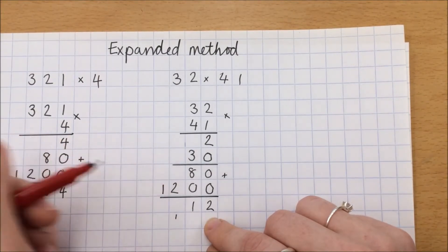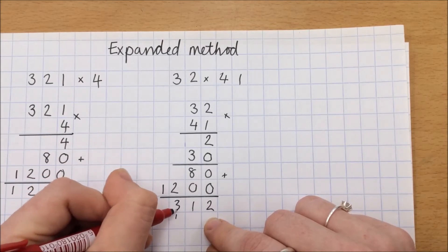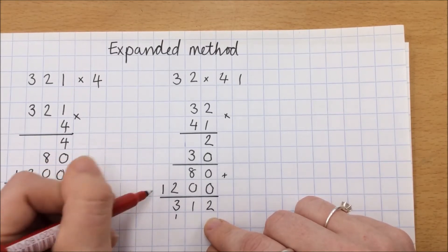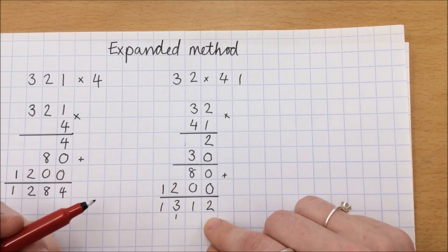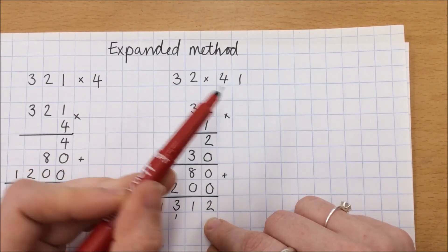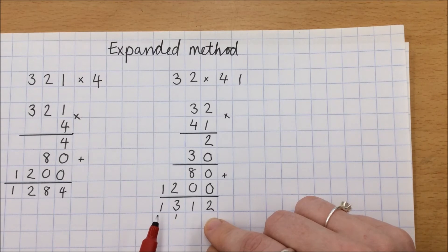200 plus that extra 100 is 300. And 1,000 plus nothing is 1,000. So 32 multiplied by 41, and my answer is at the bottom here, 1,312.